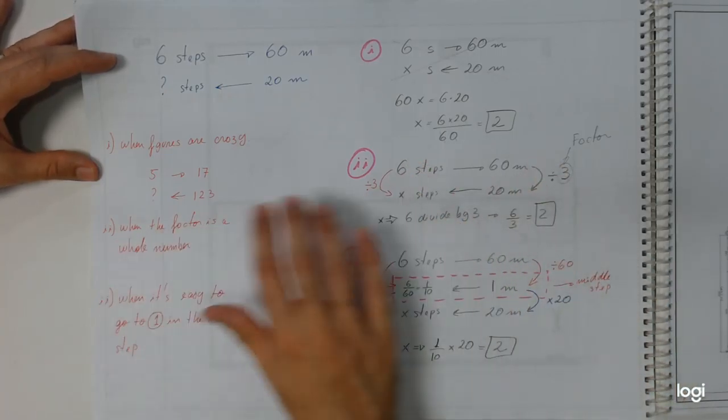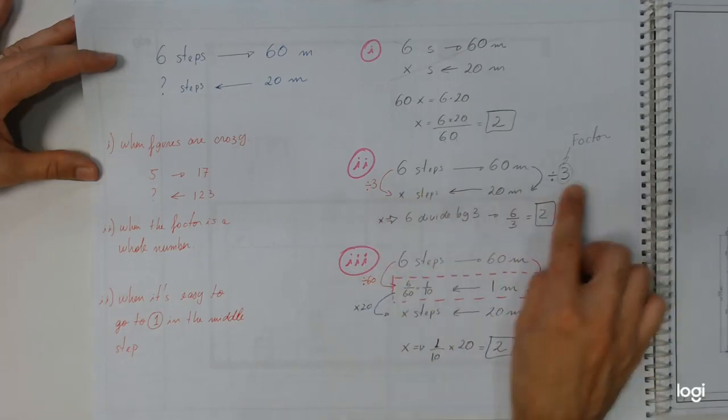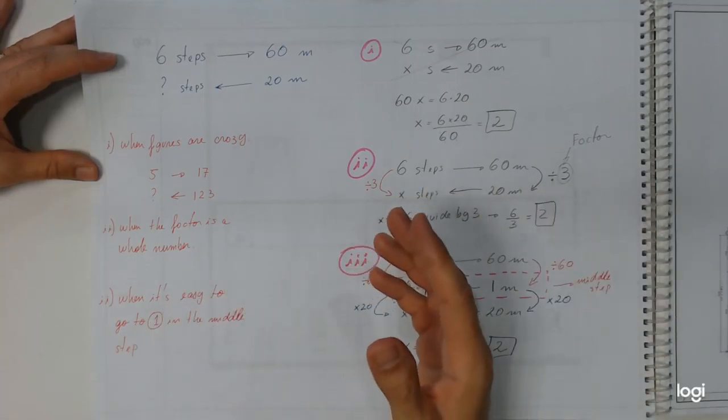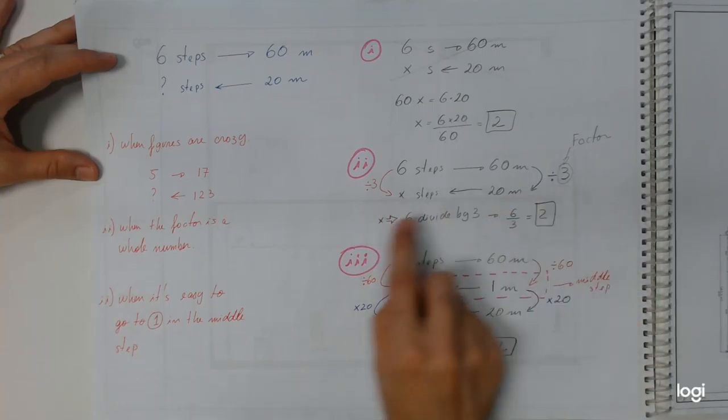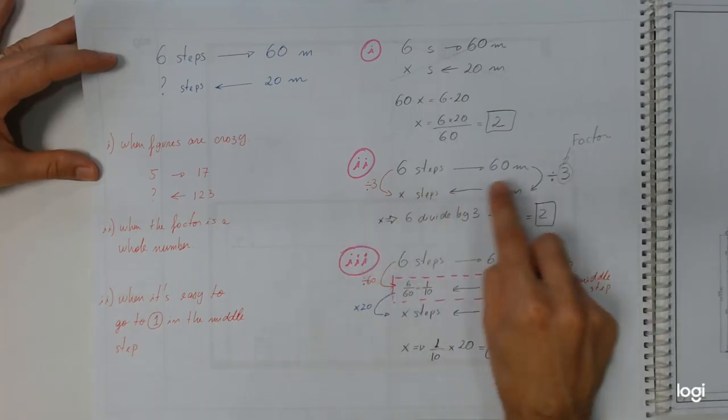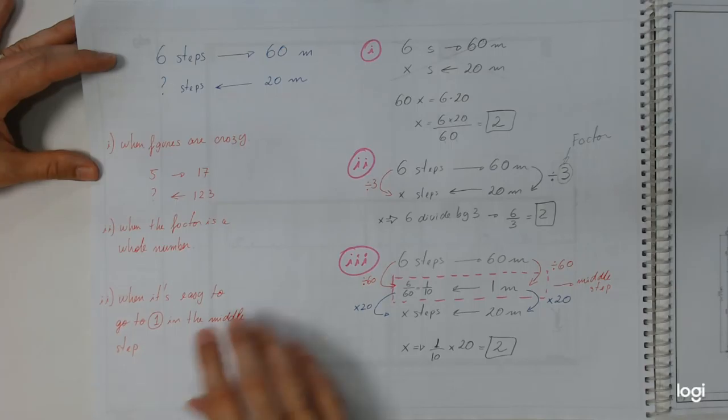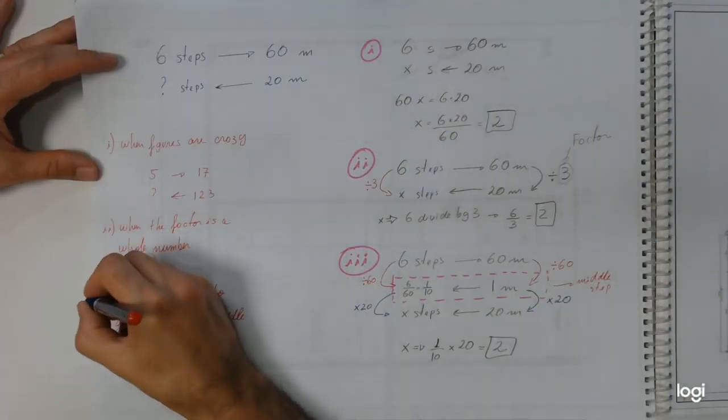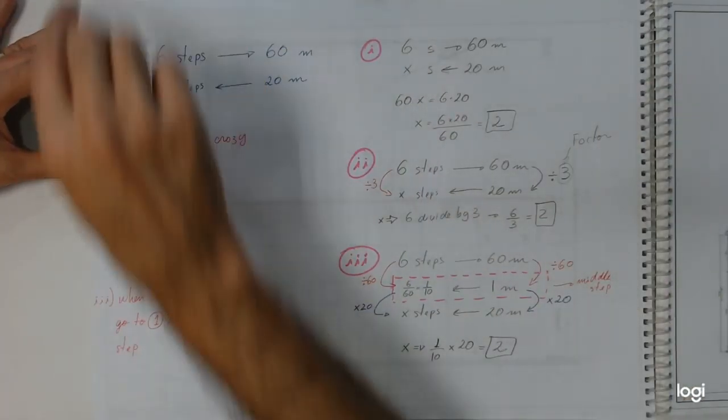Or maybe when when you are going to multiply the factor by those numbers they are easy. So the second approach we are going to use in the most majority of times, and also when the numbers are easy to work with. And this is the third method, and the third method...